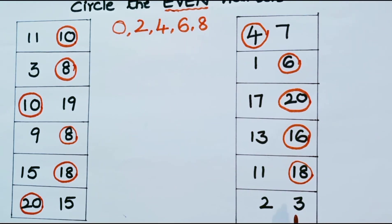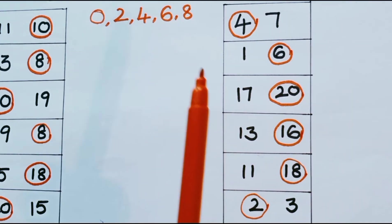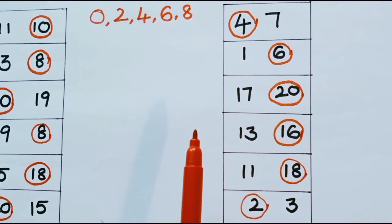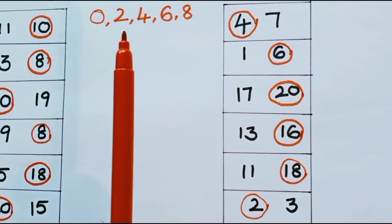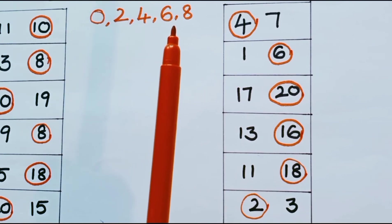What are the numbers in the next row? 2 and 3. What is the even number? It is 2. So 2 is an even number and 3 is an odd number. The even numbers end with 0, 2, 4, 6, 8.